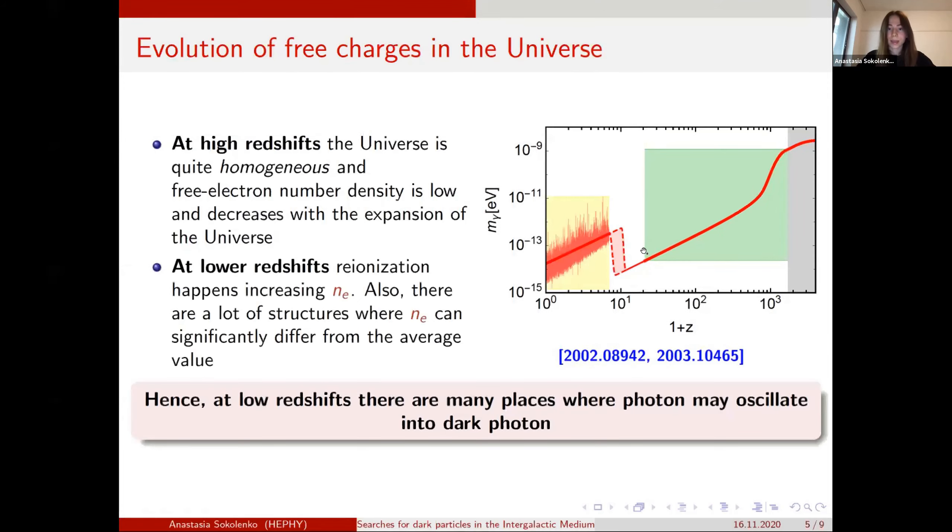But at small redshift, we know that reionization happens, and it happens from perhaps a redshift of 6 to 20. We don't know when exactly, but at this period of time, the reionization happens, and the number of electrons increased, orders of magnitude, and therefore the effective mass increases as well.